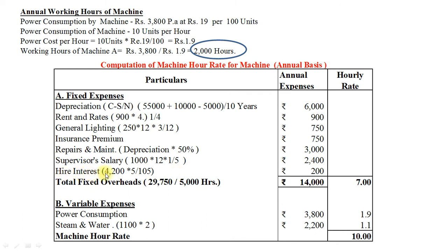Higher purchase interest: annual instalment Rs 4,200 multiplied by rate of interest divided by 100 plus rate of interest — this amounts to Rs 200. Total fixed overheads amount to Rs 14,000. With annual working hours of 2,000, the per-hour fixed charge is Rs 7. Variable expenses — Power consumption: Rs 3,800 divided by 2,000 hours equals Rs 1.90. Steam and water: Rs 1,100 per 6 months, multiplied by 2 equals Rs 2,200 per annum, divided by 2,000 hours equals Rs 1.10. Machine Hour Rate equals Rs 7 plus Rs 1.90 plus Rs 1.10, that is Rs 10.